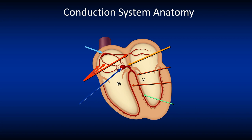So let's review the Conduction System of the Heart. We know that normal cardiac impulses originate in the Sinus Node or SA Node, a structure located posteriorly at the juncture with the Superior Venacava. From there, the conduction travels down three internodal pathways.